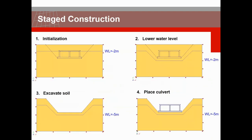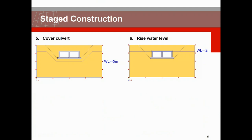For the analysis we are going to do a stage construction and consider six phases. The first is initialization where the whole model is only soil and the water level is at minus 2 meters. In the second phase we lower the water level to minus 5 meters. Then in the third phase we excavate the soil. Then we place the culvert using the culvert set and assign concrete property to it. Then we place back the soil on top of the culvert. And finally we raise the water level back to minus 2 meters.